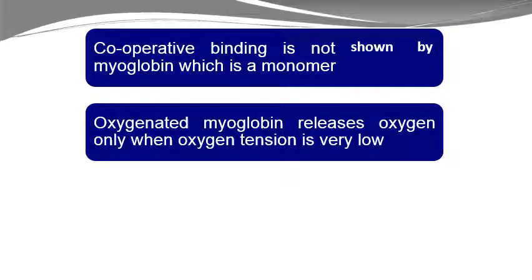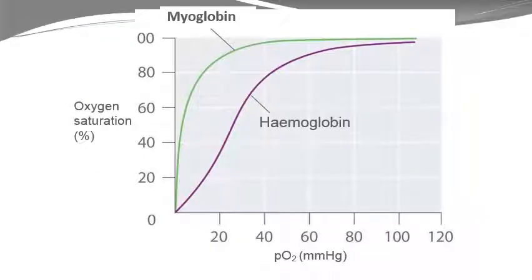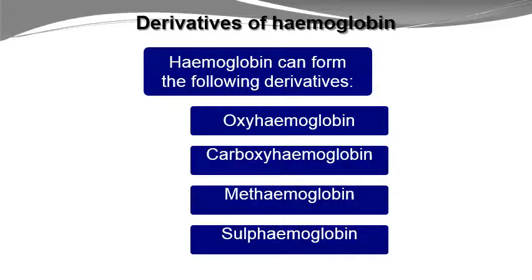Cooperative binding is not shown by myoglobin. Myoglobin is a monomer and will release oxygen only when oxygen tension is very low, so its oxygen dissociation curve does not show the sigmoidal shape — it looks more like a hyperbolic curve. Hemoglobin, however, shows the characteristic S-shaped sigmoidal curve.